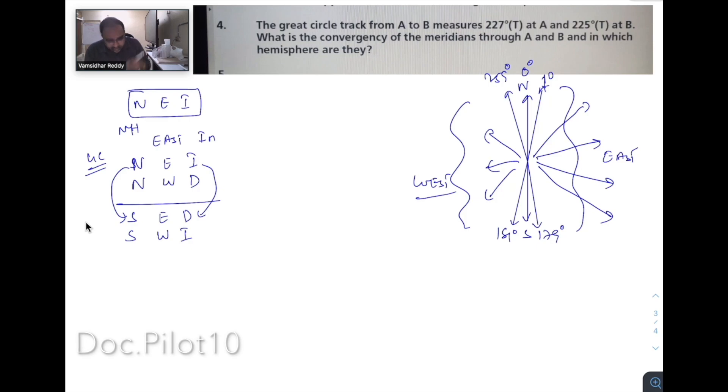With this concept in mind, we will solve this question. A Great Circle track is from A to B, starting from A and going to B. It measures 227 degrees at A. So at A it measures 227 degrees. Can I say GC initial is 227? Now it is going to B, so GC final is 225.